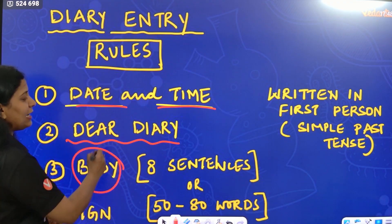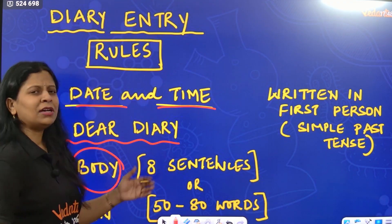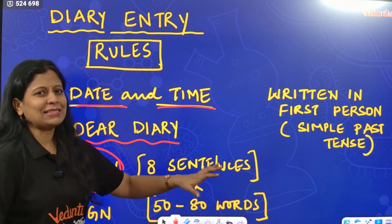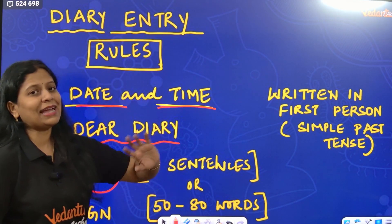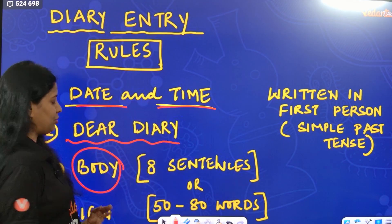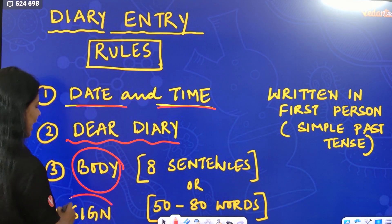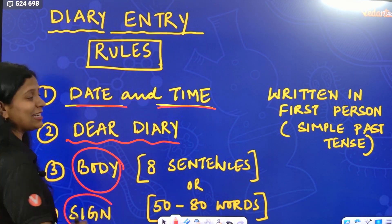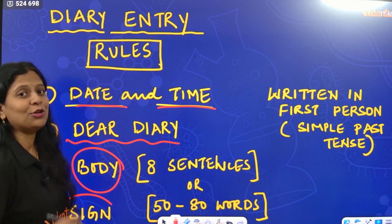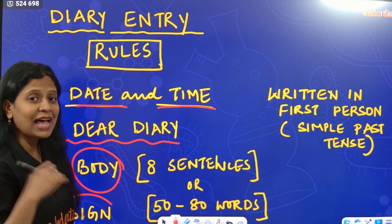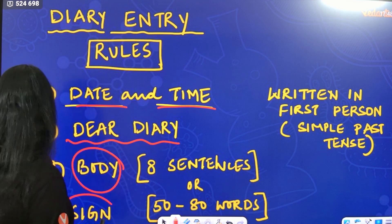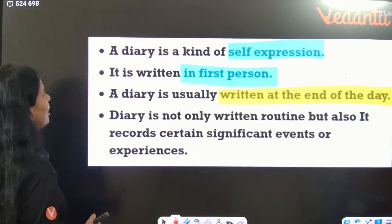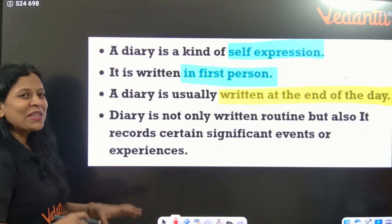The body of the diary should have 8 sentences maximum. You have to express your own feelings. Then last, there is a signature — you have to sign at the end.